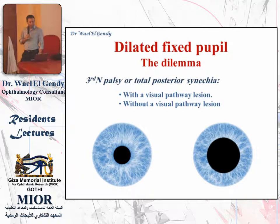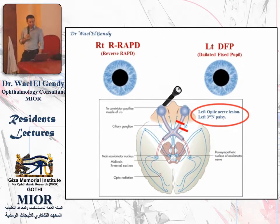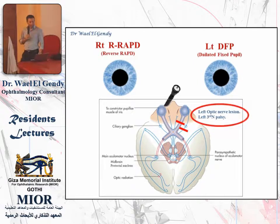What would you do if you have a dilated fixed pupil? If you have a dilated fixed pupil, this means either you have an efferent defect, like in third nerve palsy, or total posterior synechiae, or a traumatic lesion. If you want to discriminate between an isolated lesion or one associated with a visual pathway lesion, you're going to have to do your swinging flash test and rely on other signs, other than the direct relative afferent pupillary defect.